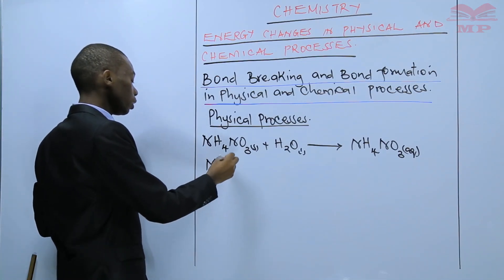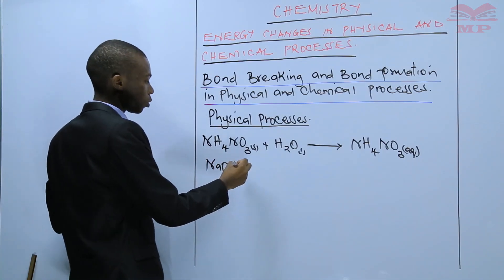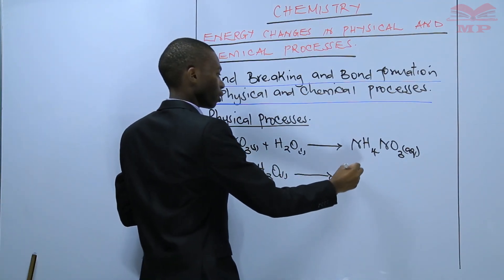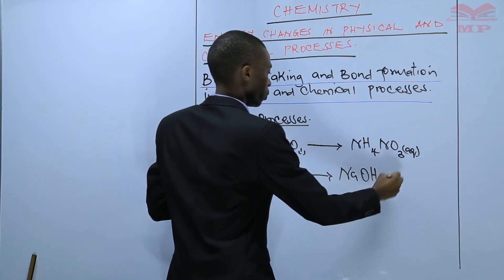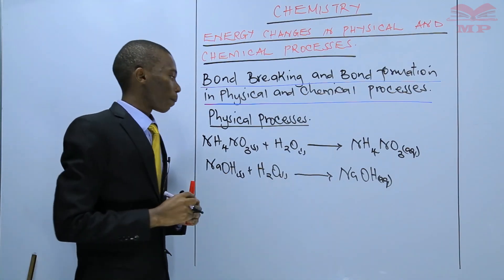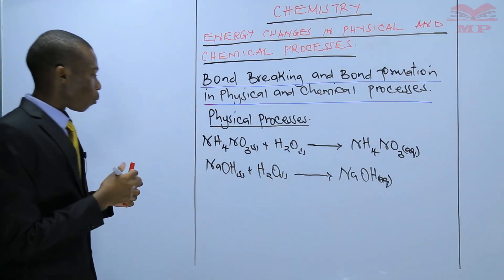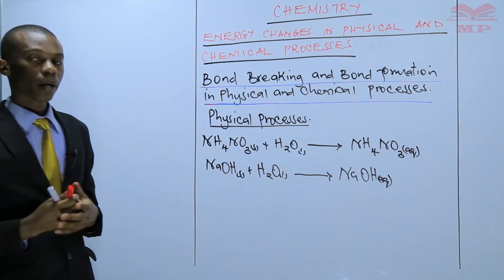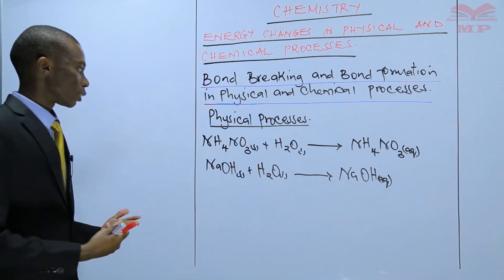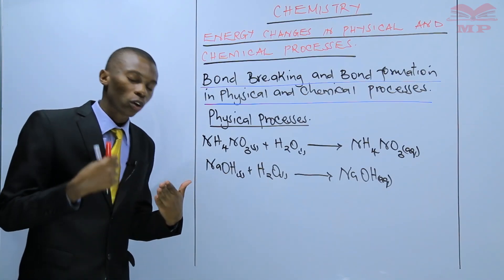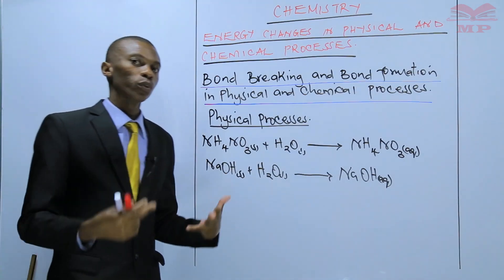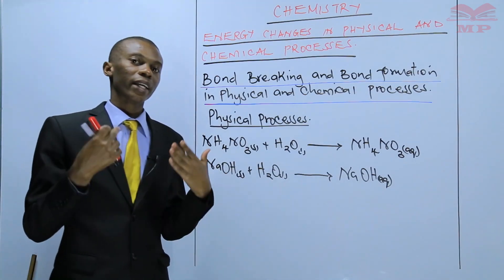The other one was sodium hydroxide, dissolved in water. We got a solution of sodium hydroxide. These are compounds — ammonium nitrate and sodium hydroxide — and all compounds are made up of atoms. These atoms are held together by chemical bonds.